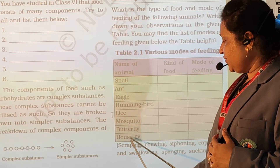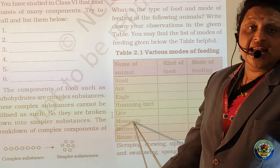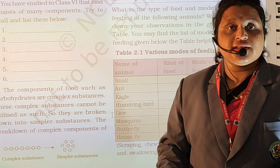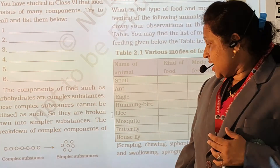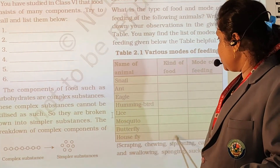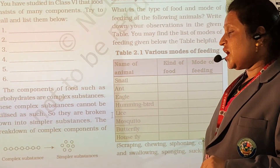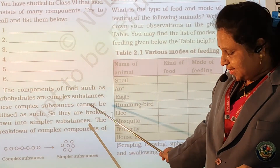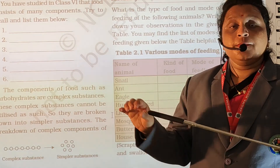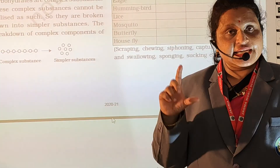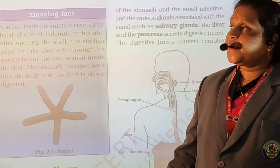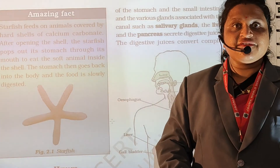Now you have to complete the remaining examples in the table: first is lice, second is mosquito, third is butterfly, and fourth is housefly. You have to write the kind of food and mode of feeding for each. Take a photo of the table and if you have any problem, WhatsApp me on my personal number.